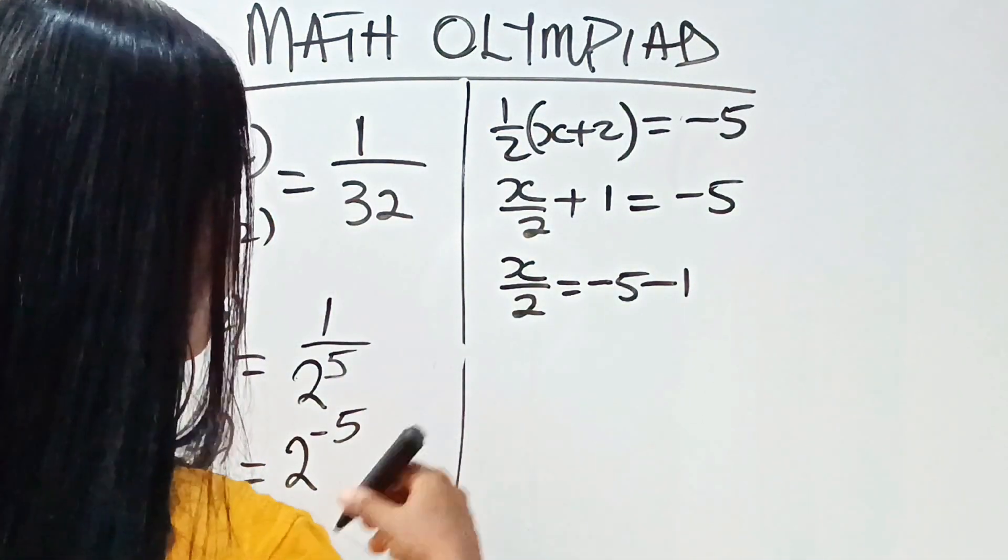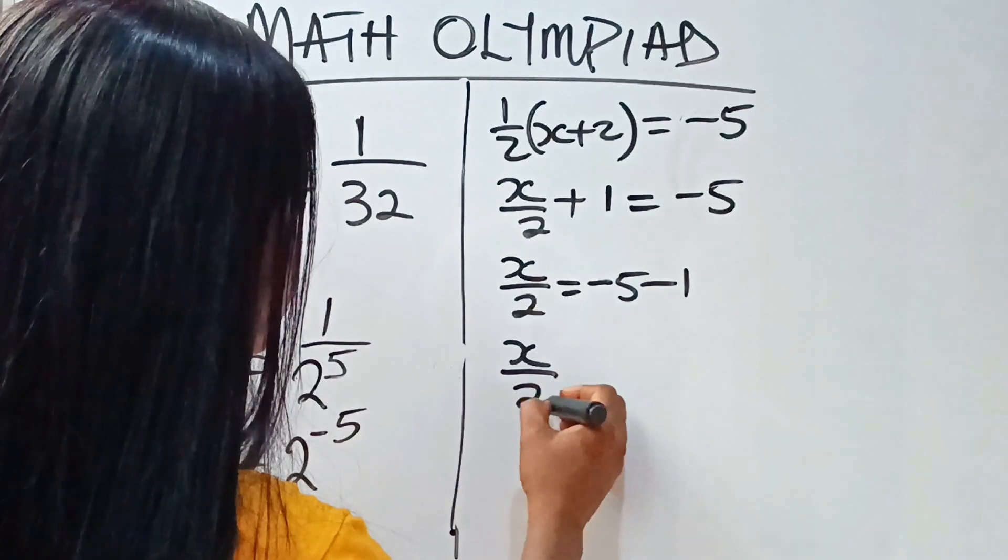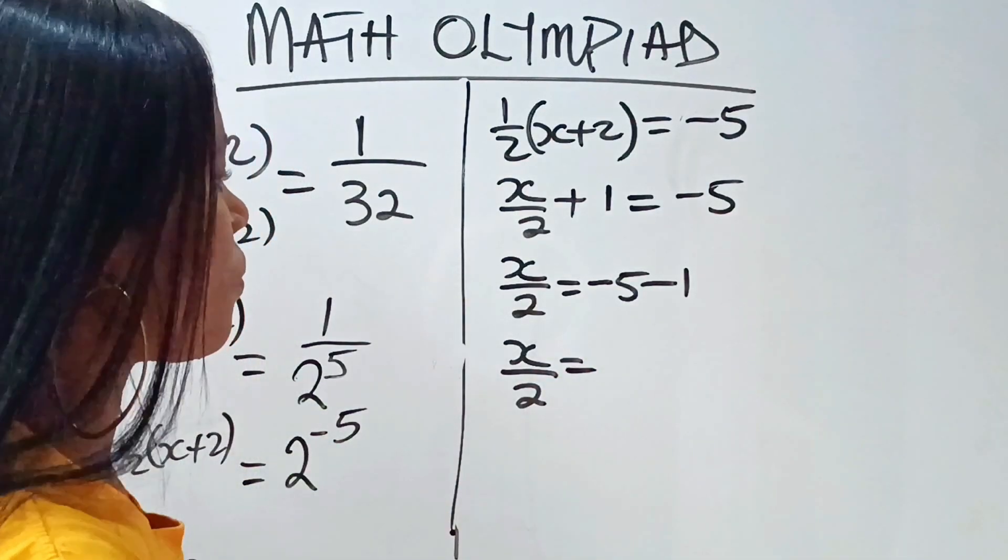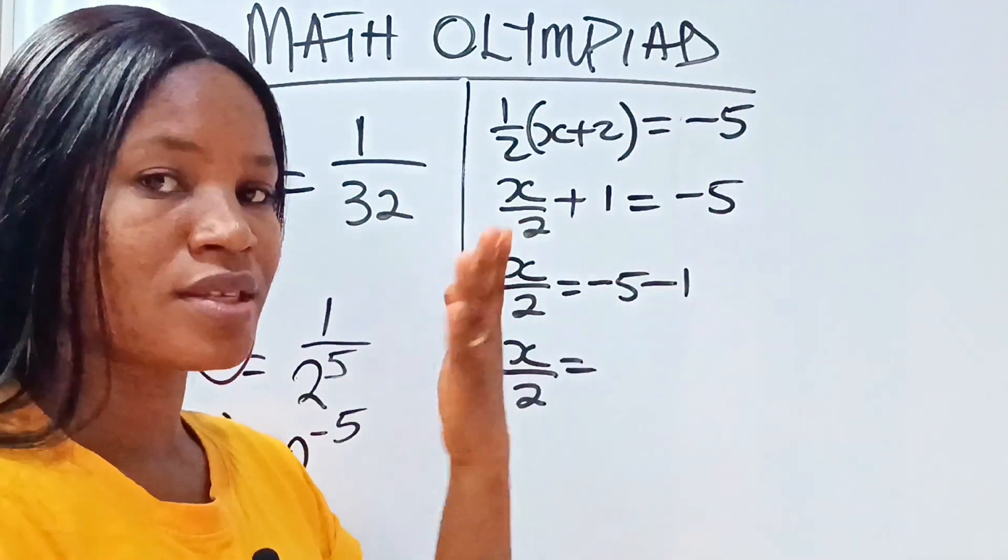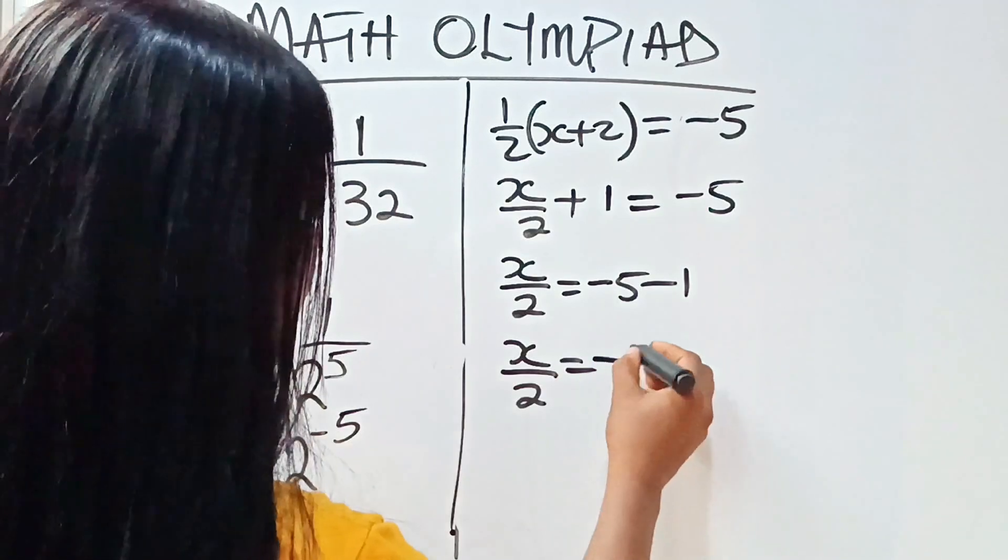Yes. So we now have that x over 2 is equal to, now minus 5 minus 1 is minus 6.